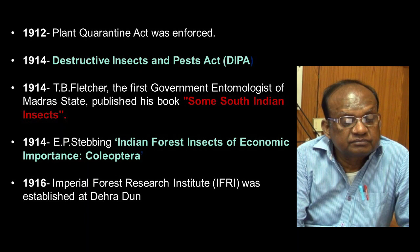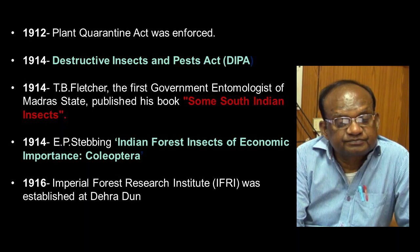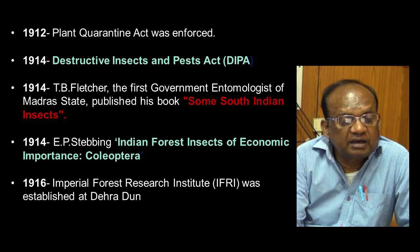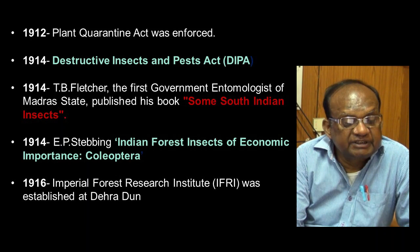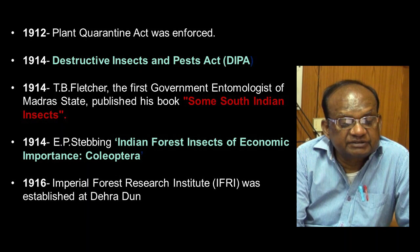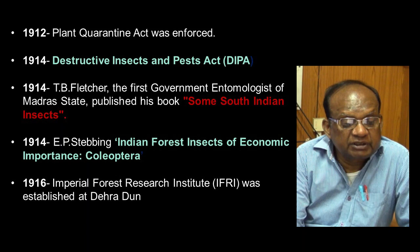In the same year, 1914, T.E. Fletcher, the first government entomologist of Madras State, published his book 'Some South Indian Insects.' Also in 1914, E.P. Stebbing wrote 'Indian Forest Insects of Economic Importance, with reference to Coleoptera.' Two years later, in 1916, the Imperial Forest Research Institute (IFRI) was established at Dehradun.